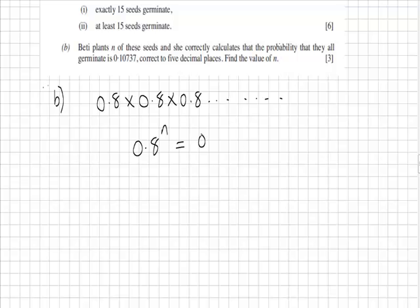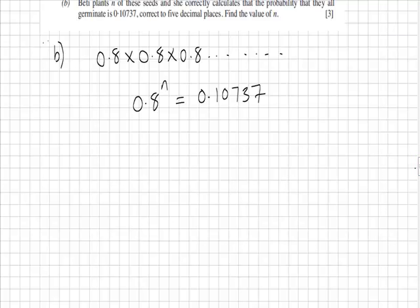We know that this is equal to 0.10737, so we've created ourselves a little equation with N as the unknown and also the power.